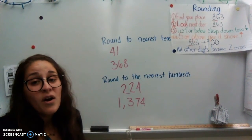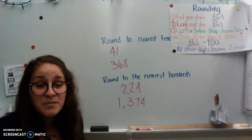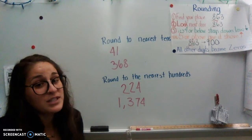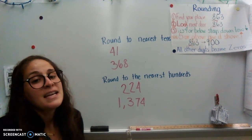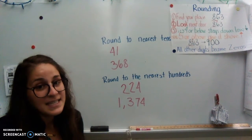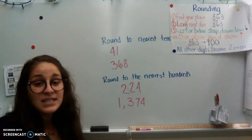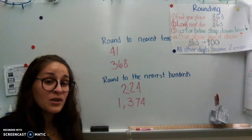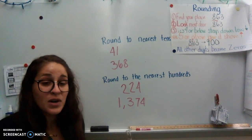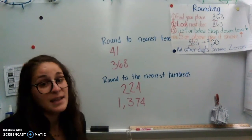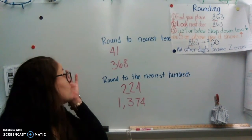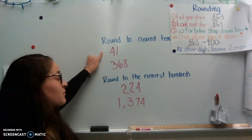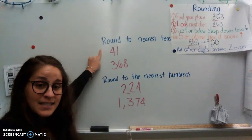And then all digits after become a zero. If there's a digit in front, what we learned yesterday is it stays the same. So we're going to practice just four examples here before you meet me for our Zoom and then do some independent work. First, we're going to round to the nearest tens.